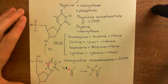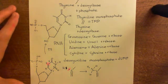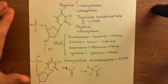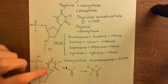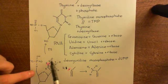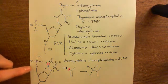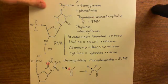Now let's discuss the structure of the inhibitors of thymidylate synthase. They look almost identical to our substrate — they look almost identical to deoxyuridine monophosphate. Let's get another piece of paper and have a look at these inhibitors.